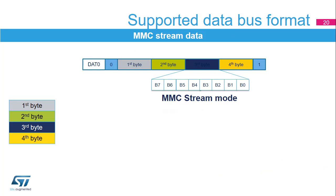In MMC stream mode, the data path sends a stream over one pin, SDMMC D0. First, a start bit is generated on the bus, followed by the data stream with the first-to-last bytes of the sequence. Then the end bit is appended to the stream on the bus line. In stream mode, there is no CRC, and the card will not return a CRC status after having received data.